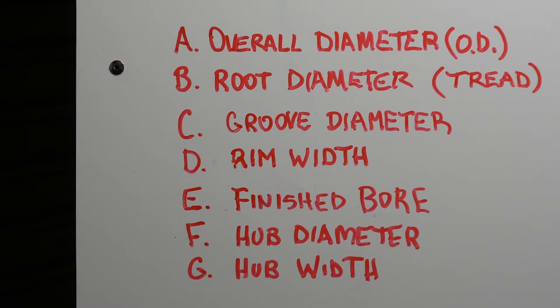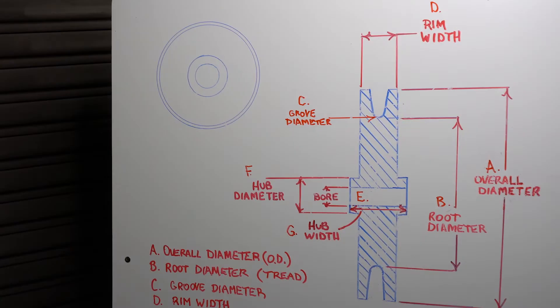There are seven dimensions that define most shivs. We have put together this shiv diagram to help you understand and identify where these measurements take place. Consider pausing the video here to understand the dimensions.